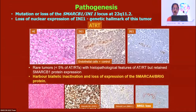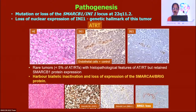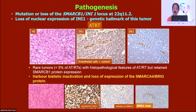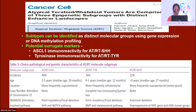Histologically, ATRT is classical when you see rhabdoid cells, but not all cases show them. It has polyphenotypic IHC differentiation with positivity for mesenchymal, epithelial, glial, and neuronal markers. The most important genetic marker is loss of INI1, available by immunohistochemistry. However, there are INI1-positive ATRTs where the genetic alteration is SMARCA4 rather than SMARCB1 — in those cases, do IHC for BRG1; BRG1 loss indicates ATRT with SMARCA4 mutation.